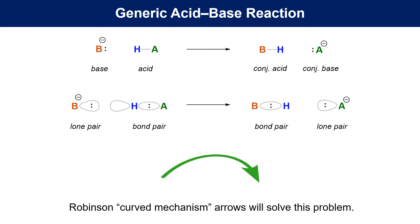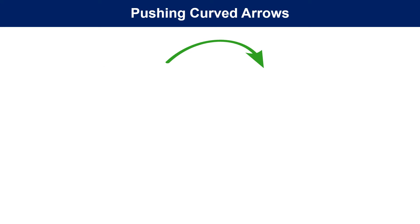Sir Robert Robinson came up with the curved arrow to describe these interactions, which is now the universal method for describing dynamic changes in organic reactions. These arrows are now a convention, like driving on the correct side of the road.